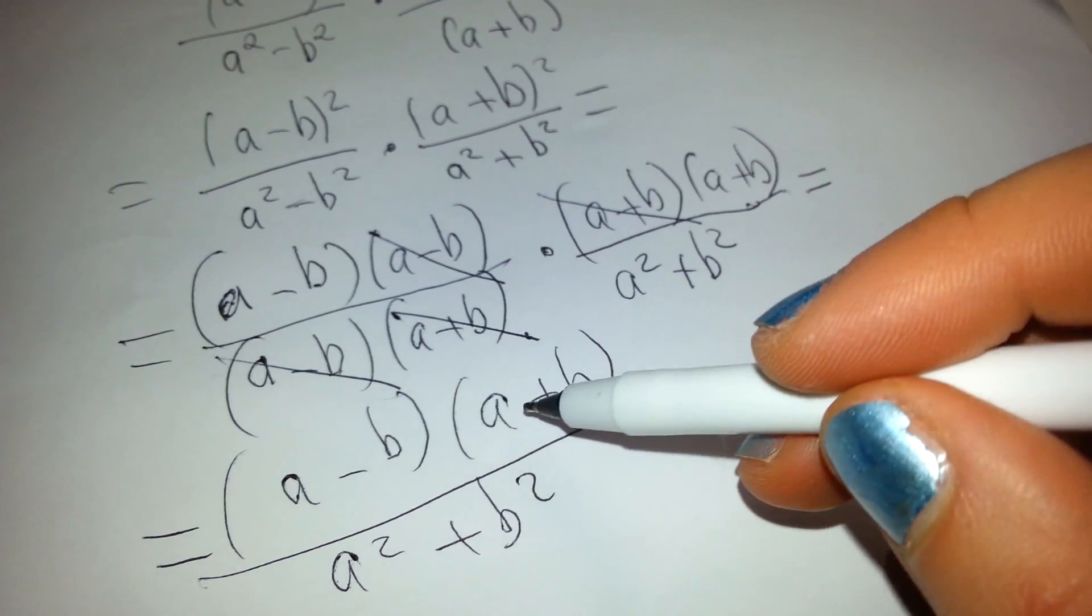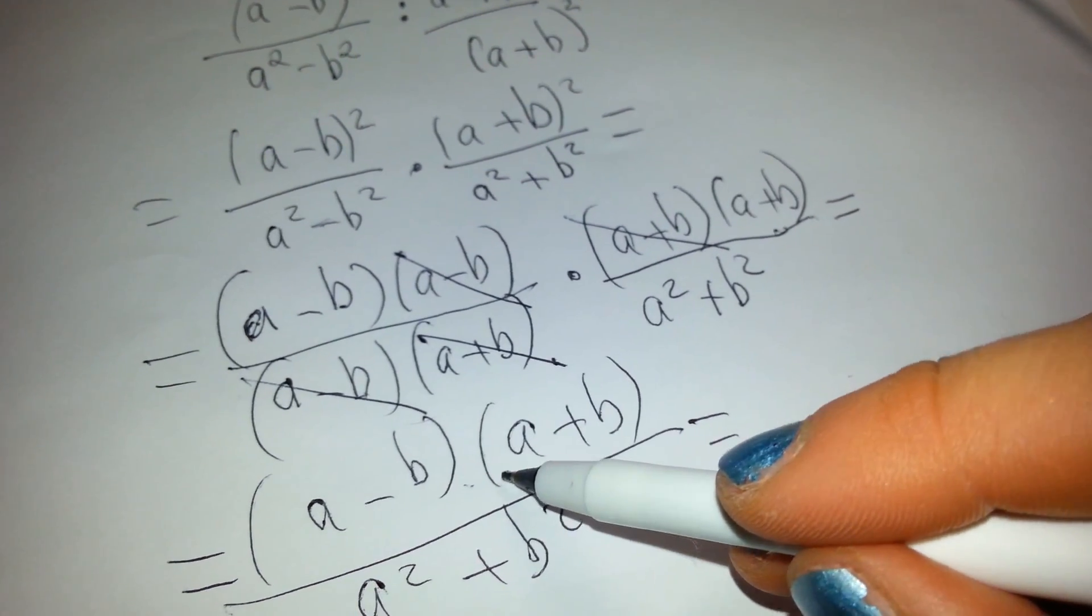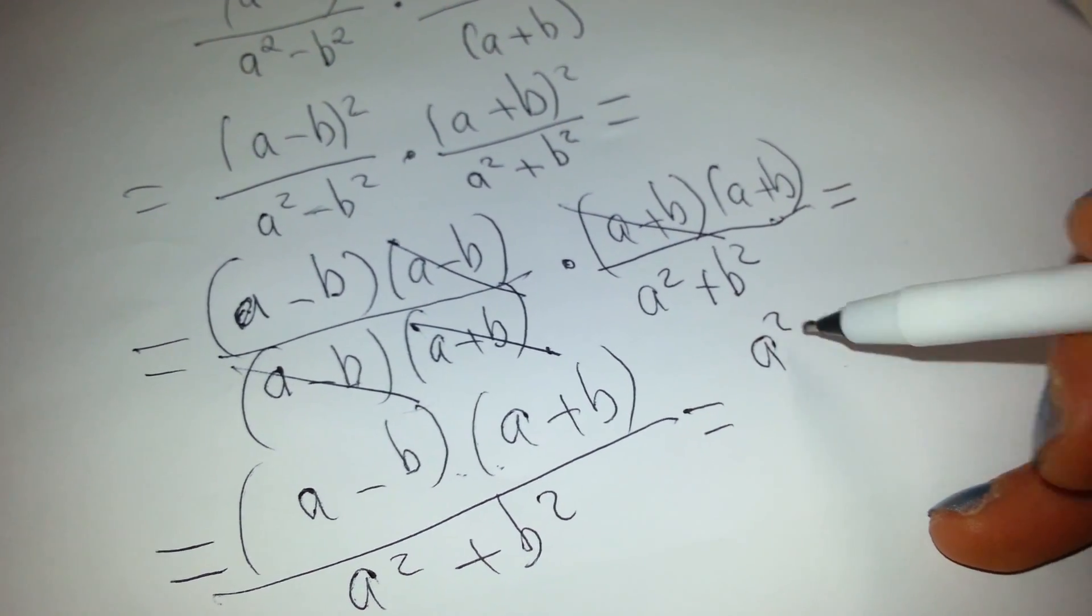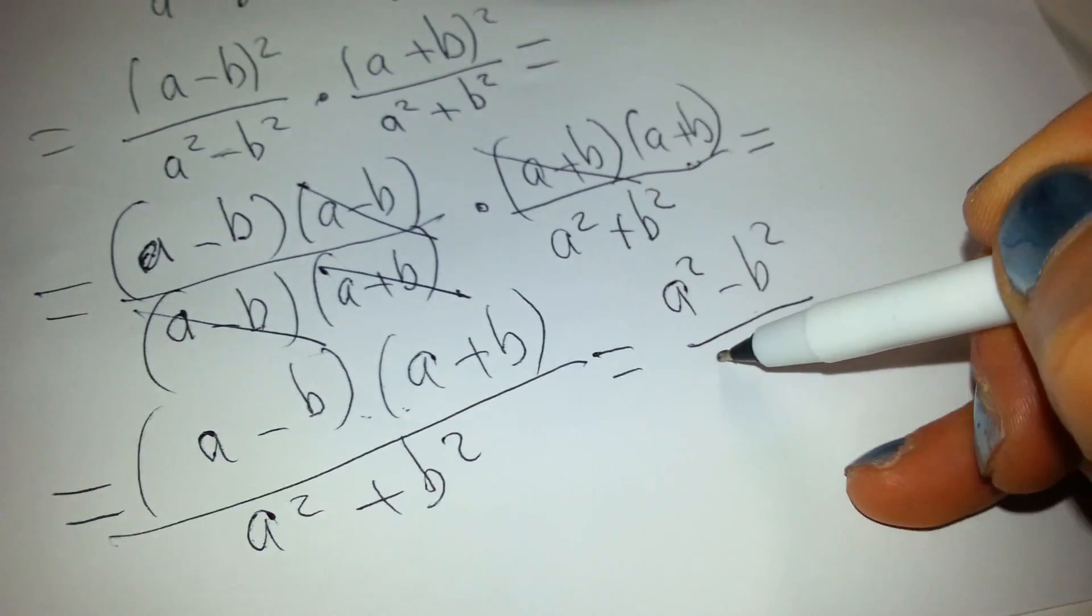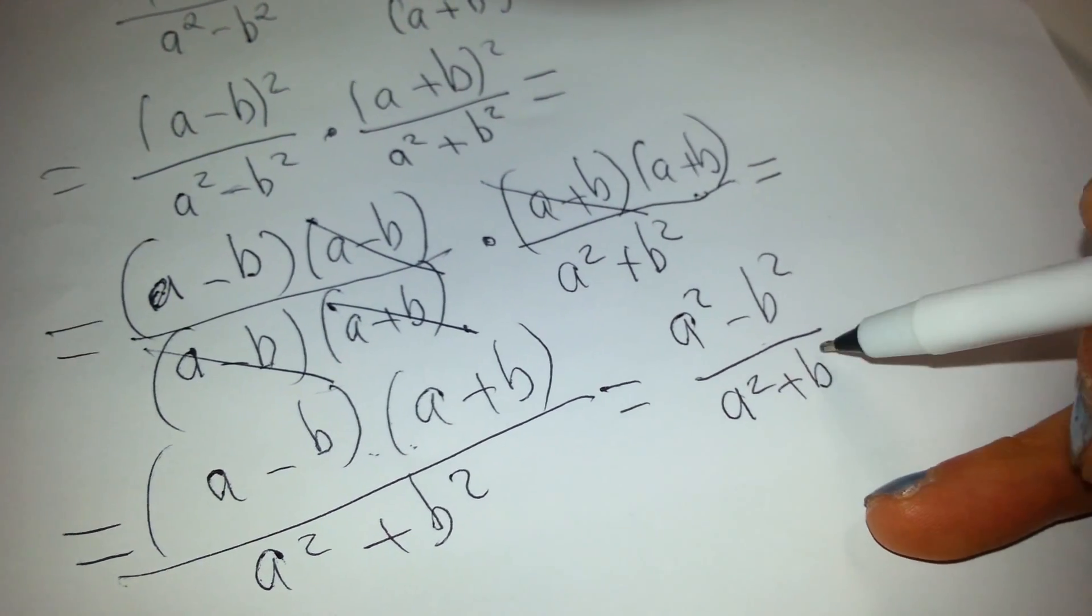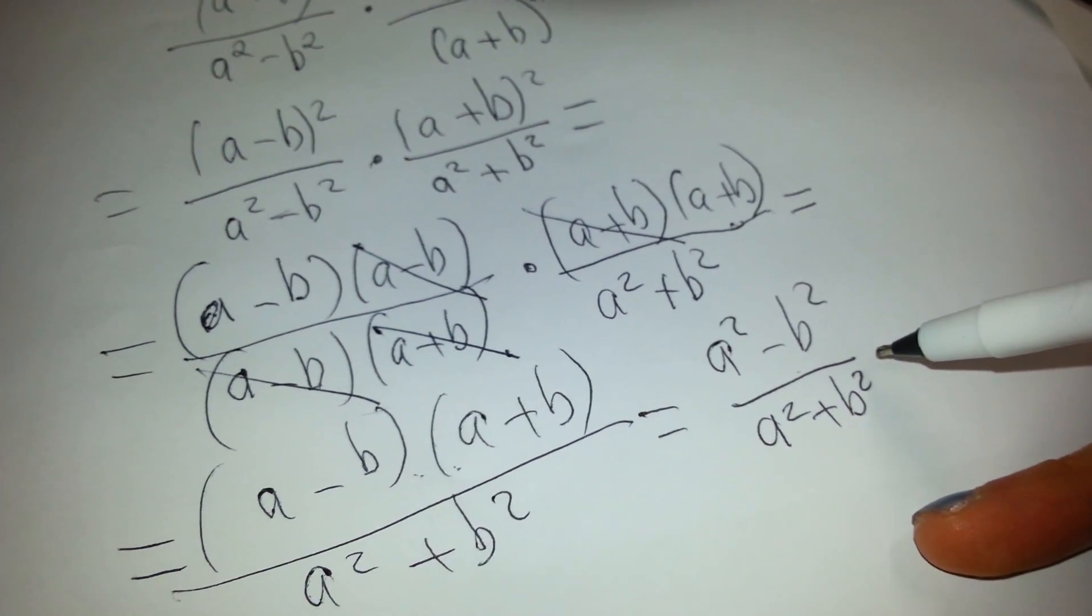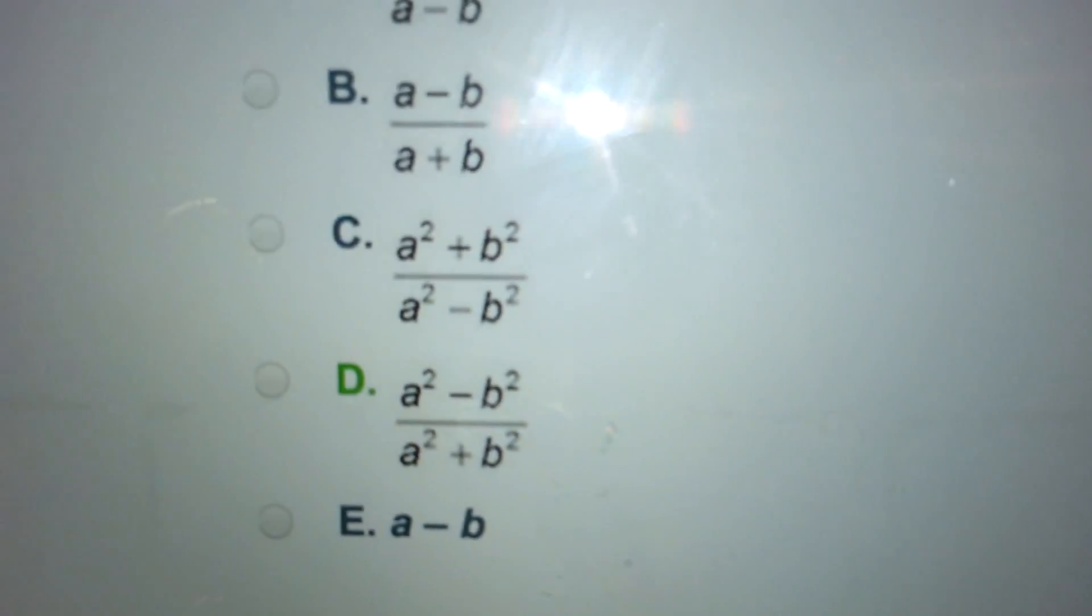And then, now we see, this is, we get the formula too. We get a minus b squared, a squared plus b squared. And this is our answer, correct answer, right here, the D.